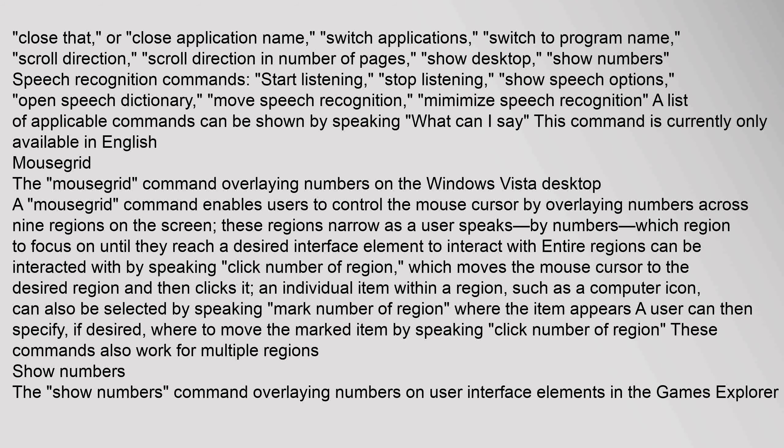The mouse grid command enables users to control the mouse cursor by overlaying numbers across nine regions on the screen. These regions narrow as a user speaks numbers to indicate which region to focus on, until they reach a desired interface element. Entire regions can be interacted with by speaking 'click number of region', which moves the mouse cursor to the desired region and clicks it. An individual item within a region, such as a computer icon, can be selected by speaking 'mark number of region'. A user can then specify where to move the marked item by speaking 'click number of region'.